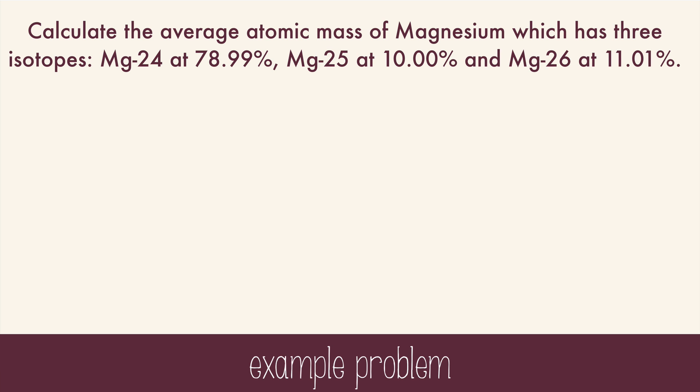Magnesium 24 at 78.99%, magnesium 25 at 10%, and magnesium 26 at 11.01%. What we need to do is multiply the mass with the percent abundance. Remember to write those as a decimal. Magnesium 24 times its percentage, all I have to do is move the decimal two places to the left to get 0.7899, plus magnesium 25 times 0.1, plus magnesium 26 times 0.1101.